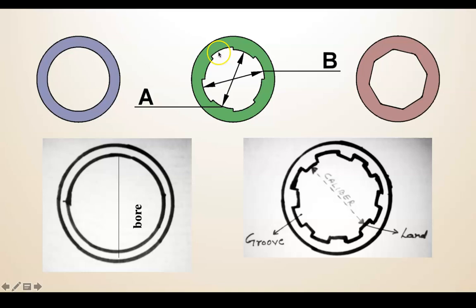In smooth bore firearms, the internal diameter is commonly called the bore. In rifle bore firearms, the distance between two opposite grooves or two opposite lands is known as the caliber. Both refer to the internal measurement, but 'caliber' is used for rifled bore cases and 'bore' is used for smooth bore cases. The number and direction of grooves vary from firearm to firearm and manufacturer to manufacturer.